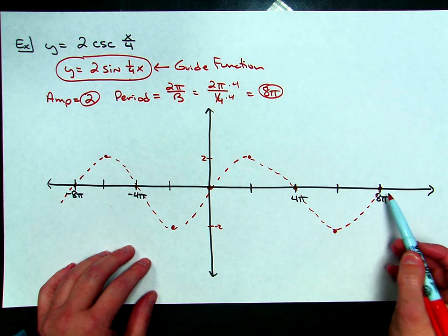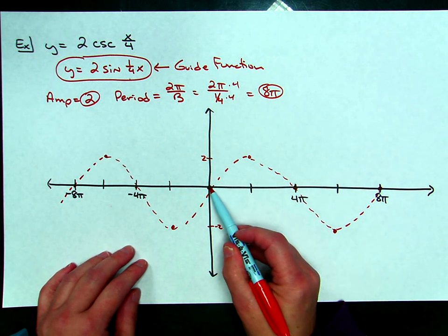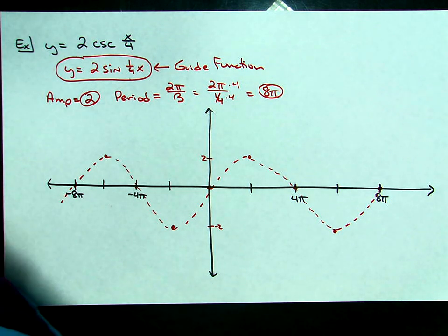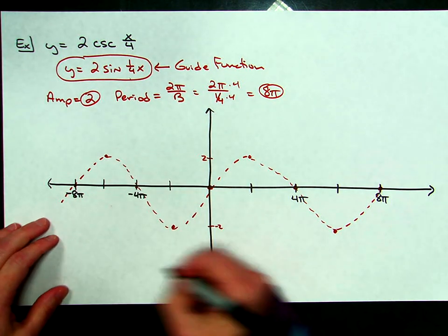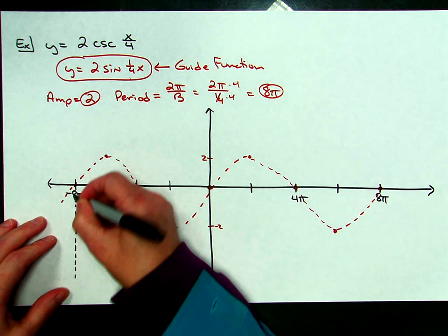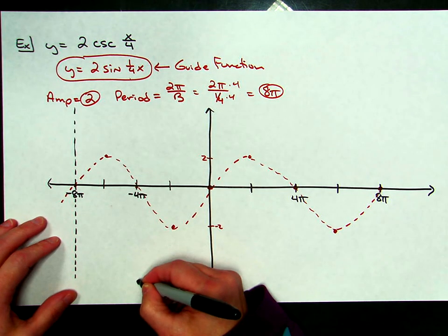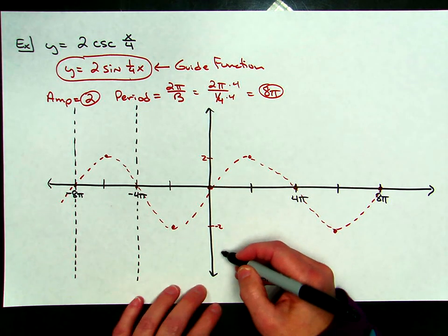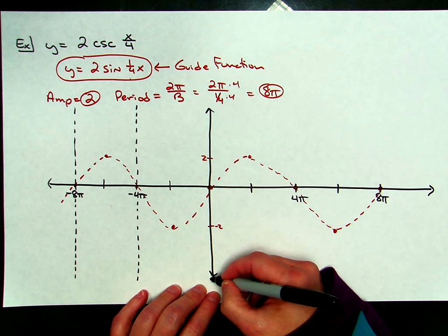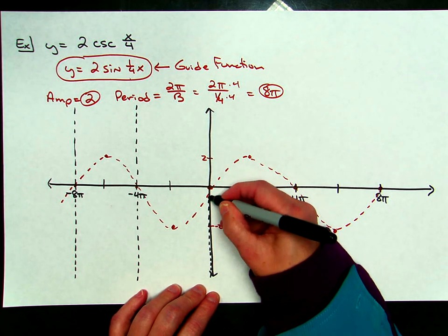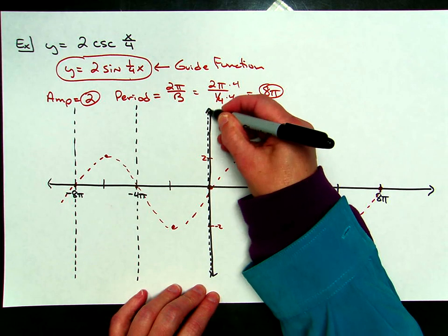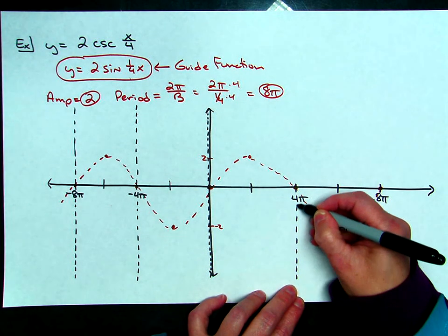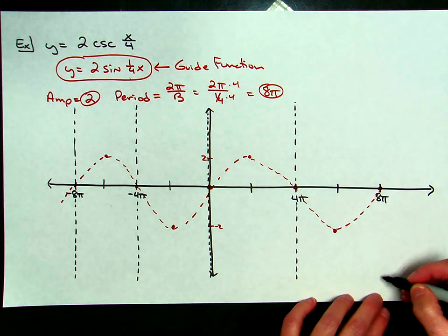Every place that the sine wave crosses the x-axis — every one of those x-intercepts — I am going to add a vertical asymptote. So I'm going to put vertical asymptotes at negative 8π, at negative 4π, one on the y-axis, another one at 4π, and then another one at 8π.